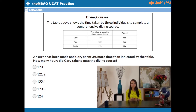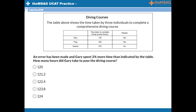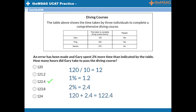Question 2: The table above shows the time taken by three individuals to complete a comprehensive driving course. An error has been made and Gary spent 2% more time than indicated by the table. How many hours did Gary take to pass the driving course? You should be able to do this mentally within 5 seconds. Using our trick: 10% of 120 is 12, so 1% must be 1.2. If 1% is 1.2, then 2% will be 2.4. 120 plus 2.4 gives us the answer of 122.4. It's really that easy.